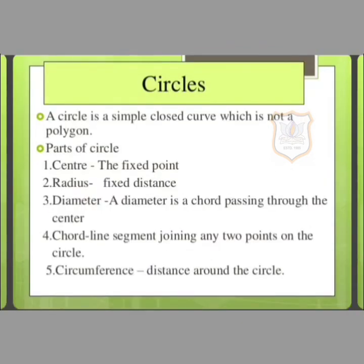Our next topic is circles. A circle is a simple closed curve which is not a polygon. A circle can be defined as a closed figure formed by a set of points in a plane which are located at the same distance from a fixed point which is the center.